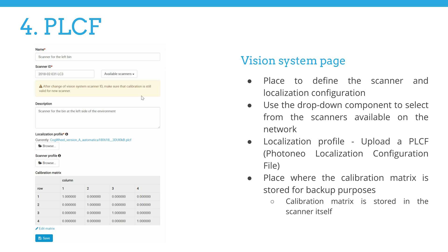As part of configuring the vision system, please start by selecting a scanner which will be associated with the instance. Use the drop-down component to select from the scanners available on the network. Here is also the place to upload the PLCF. For now, please disregard the scanner profile section — this feature will be enabled in one of the next releases. The reasoning is that different objects might require different scanning parameters due to different optical attributes. The scanning profile will allow you to change those parameters via Bin Picking Studio. The identity matrix at the very bottom of this page will be substituted with a transformation matrix from camera to robot space, which will be automatically loaded after robot to camera calibration.